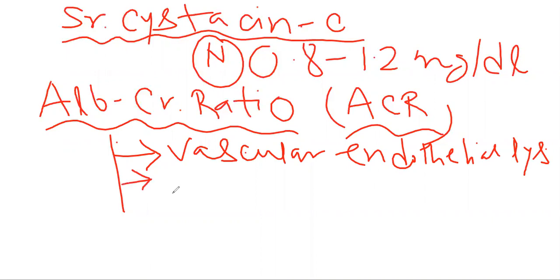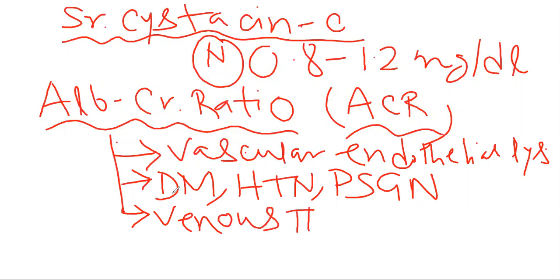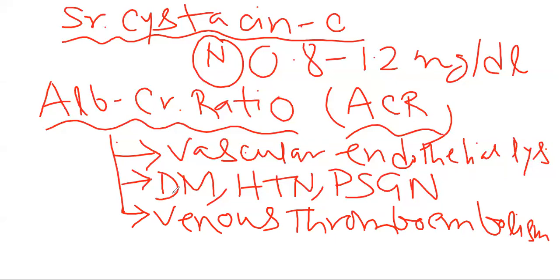Whereas in case of diabetes mellitus, hypertension, these are the common diseases where you can use this albumin-creatinine ratio as a prognostic marker, as well as post-streptococcal glomerulonephritis. So in short, diabetes mellitus, hypertension as well as post-streptococcal glomerulonephritis are diseases where you can use this ACR as a prognostic marker. Along with that, you can also use it to assess the risk factor for venous thromboembolism. These two are newer parameters.